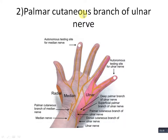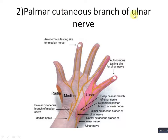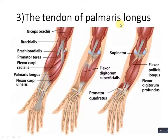Similarly, the second structure is the palmar cutaneous branch of the ulnar nerve. It is also a cutaneous branch passing almost at the skin level, so it is also a very superficial structure and should also pass over the flexor retinaculum. So the first structure was the palmar cutaneous branch of the median nerve, and the second is the cutaneous branch of the ulnar nerve.